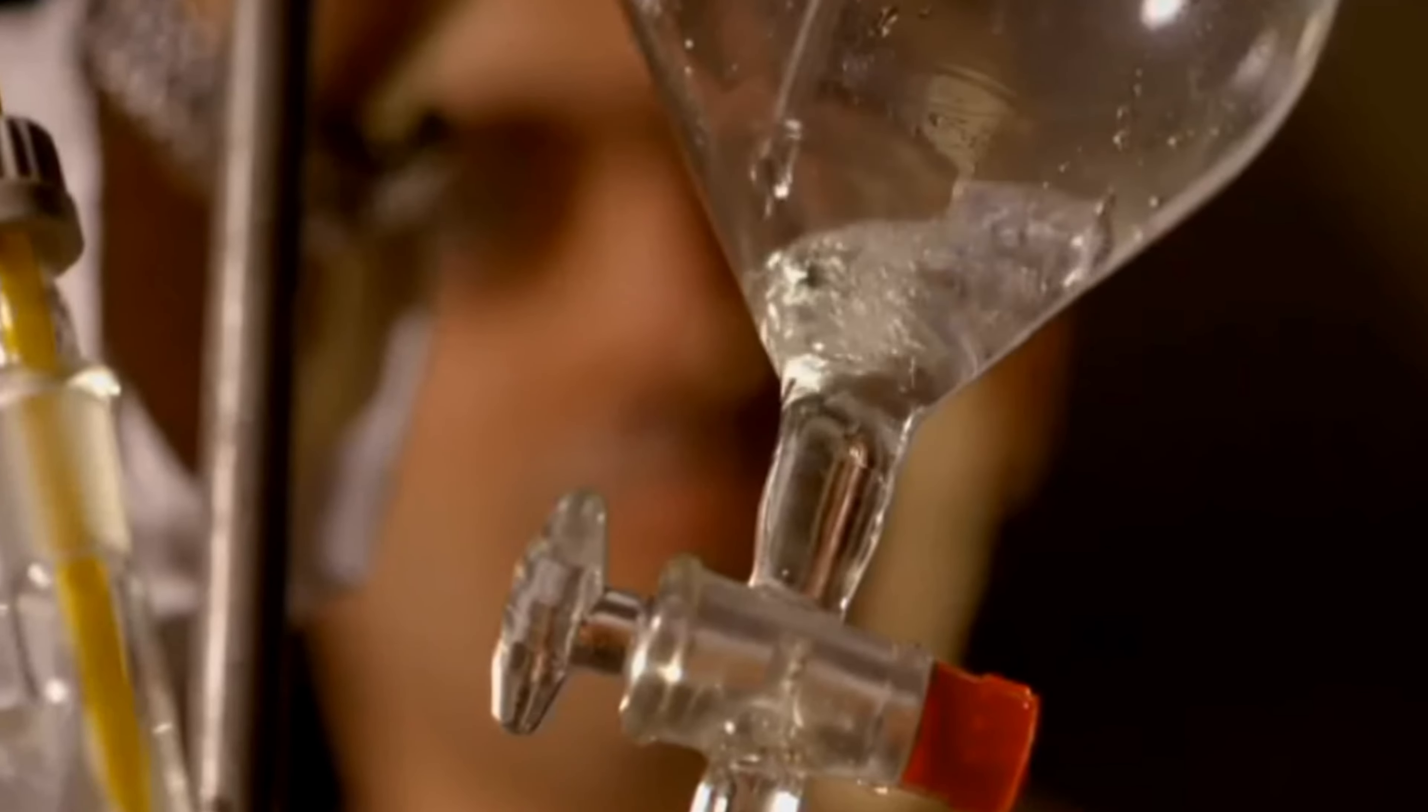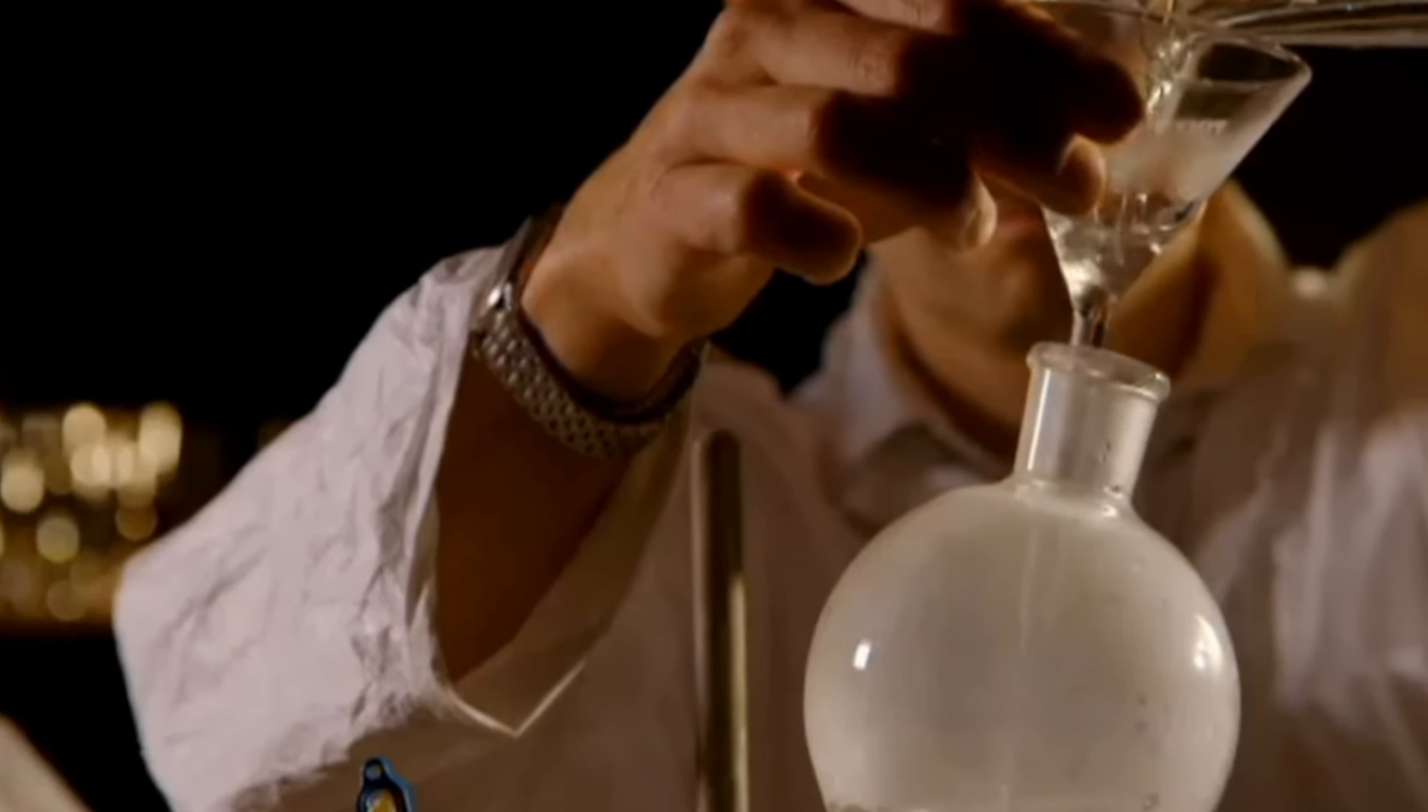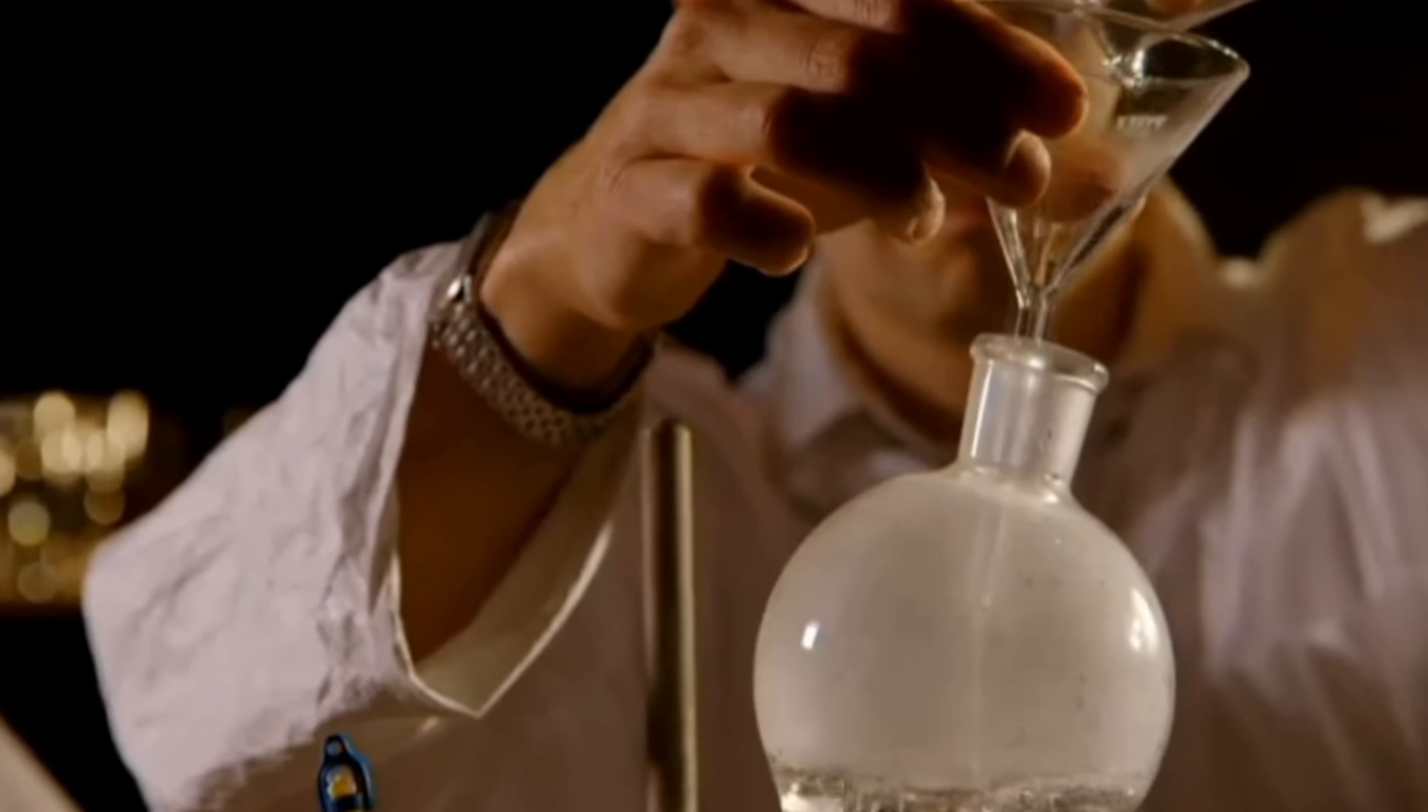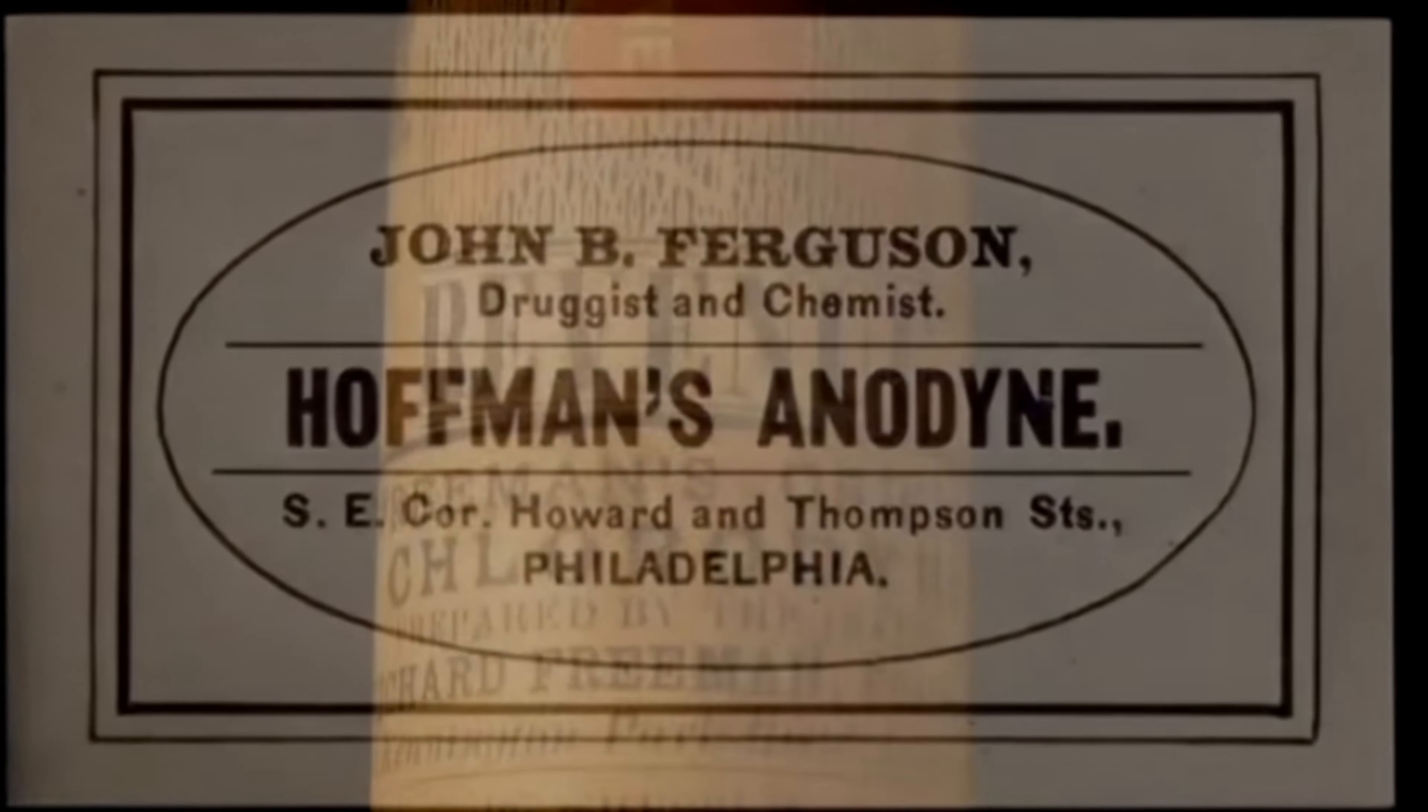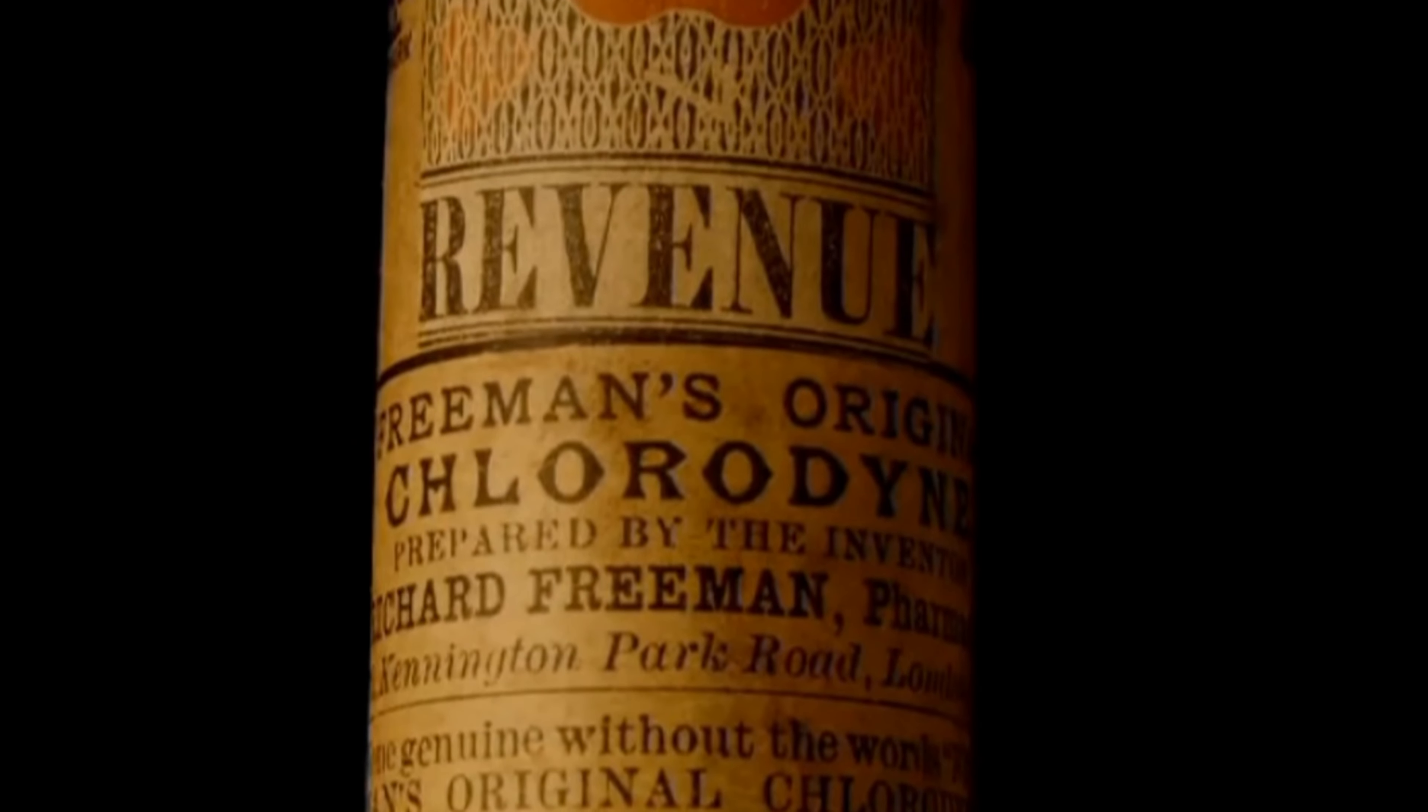Occult chemistry shows us another and higher condition than the gaseous, into which also all substances known to us can be translated or transmuted, and to that condition we have given the name of etheric.